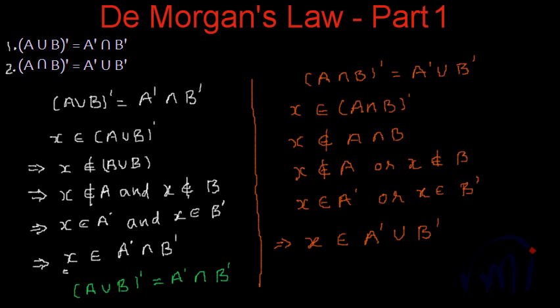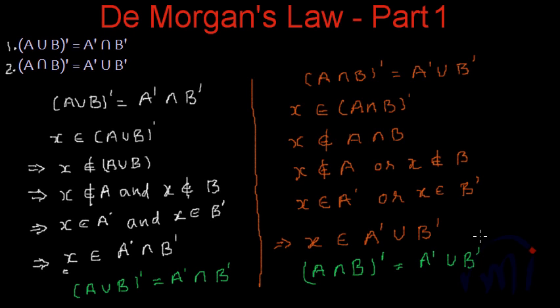That means from here we could prove that A intersection B whole complement is actually equal to A complement union B complement. So this is the written proof of these two laws, the first two De Morgan's Laws. After this we have the second part of the written explanation of the rest of De Morgan's Laws. Keep watching Math Smart, bye-bye till then.